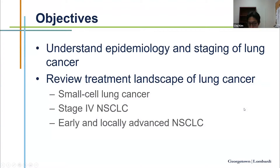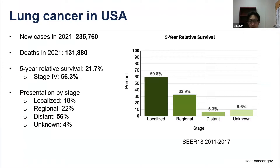The goal of this lecture is to understand the epidemiology and staging system of lung cancer, covering both non-small cell lung cancer and small cell lung cancer, starting with small cell first. Lung cancer is common. In terms of new cases this year, it is expected to be around 230,000 in the United States. In terms of mortality from lung cancer this year alone, we will see about 130,000 deaths related to lung cancer.